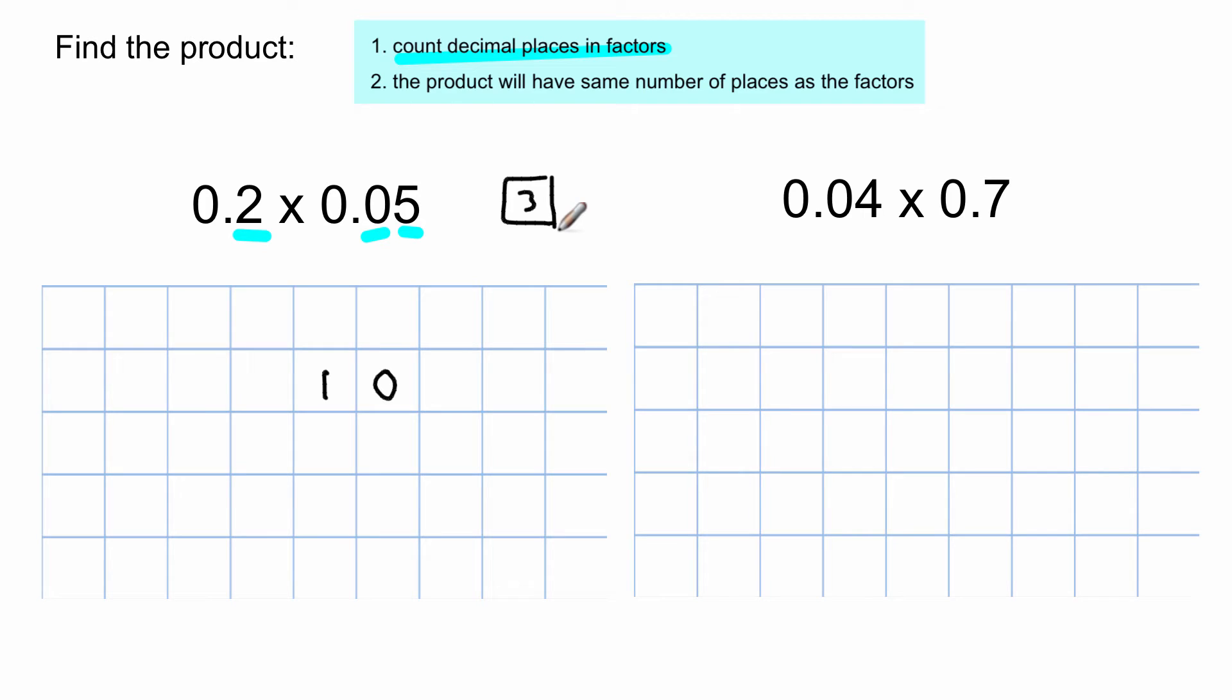Then I'm going to take the decimal places that I counted in each factor and I'm going to put it in the product. And again, I'm going to use the highlighter here. So I'm going to move over three spaces. Remember, start from the right and you go over one space, two spaces, three spaces, and the decimal goes there.